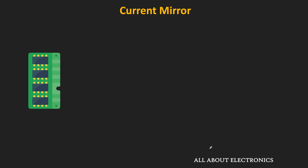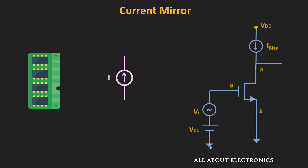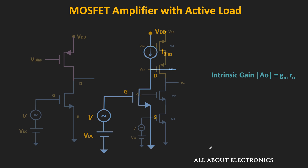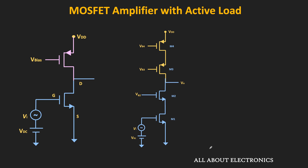Typically in the integrated circuits, the MOS amplifiers are biased using the current source, and typically in ICs, this current mirror circuit is used as a current source. The advantage of biasing the amplifier with a constant current source is that it provides high voltage gain and it also improves the biasing stability. In earlier videos, we have seen how this current source can be implemented using a single PMOS transistor or using the cascode current source.